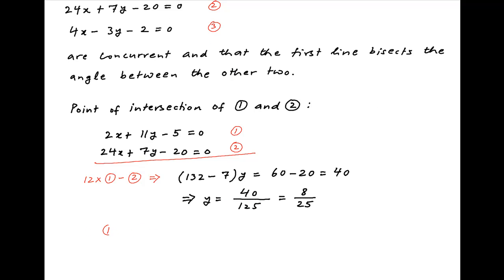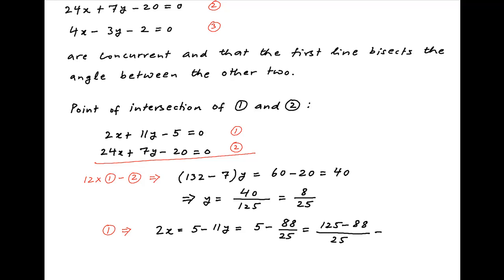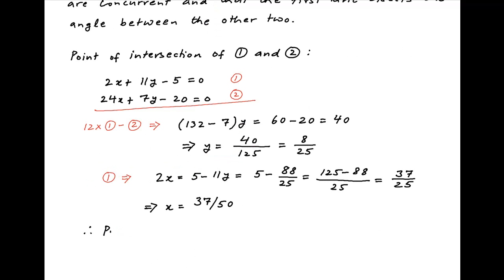Putting this in equation 1, we get 2x equal to 5 minus 11y, which is equal to 5 minus 88 divided by 25, which is equal to 125 minus 88 divided by 25, which is equal to 37 upon 25. Therefore x is equal to 37 upon 50. Therefore the coordinates of the point of intersection of lines 1 and 2 are (37/50, 8/25).